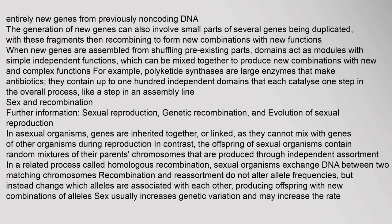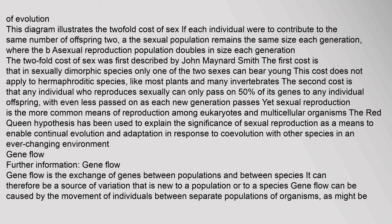Sex and Recombination: In asexual organisms, genes are inherited together or linked, as they cannot mix with genes of other organisms during reproduction. In contrast, the offspring of sexual organisms contain random mixtures of their parents' chromosomes produced through independent assortment. In a related process called homologous recombination, sexual organisms exchange DNA between two matching chromosomes. Recombination and re-assortment do not alter allele frequencies but instead change which alleles are associated with each other, producing offspring with new combinations of alleles. Sex usually increases genetic variation and may increase the rate of evolution.